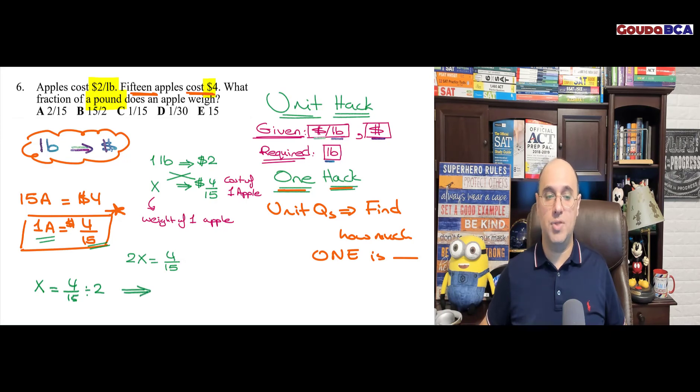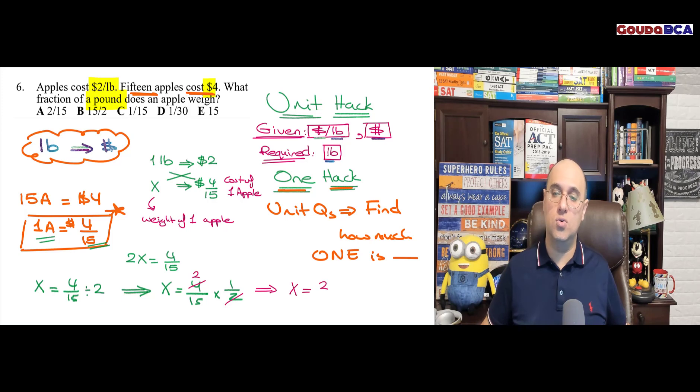That means that x equals 4 over 15 divided by 2. Remember, when we divide something by 2, it's the same as saying times half. Now I can cancel out the 2 down here with a 2 from here. So I'm left with x equals 2 over 15.